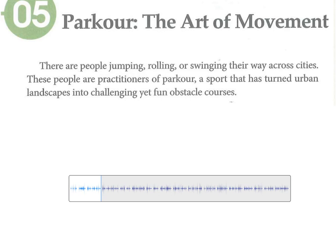这是第一段的一个部分。首先他说 'There are people'，有人怎么样呢？在jumping就是跳，rolling是滚动，rolling stone就是滚石，了解。